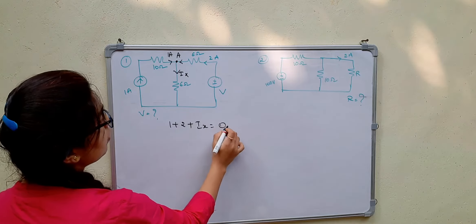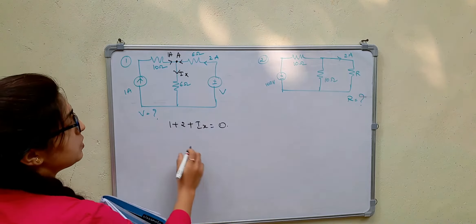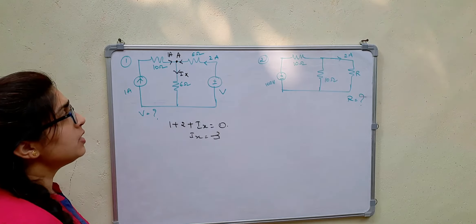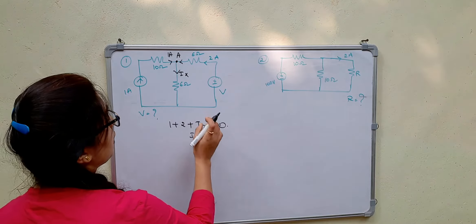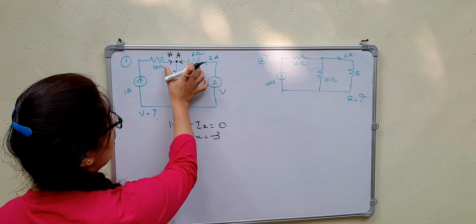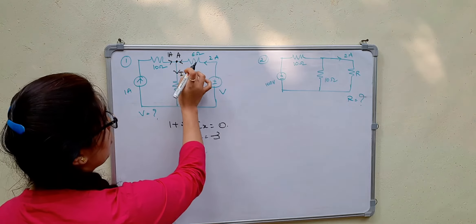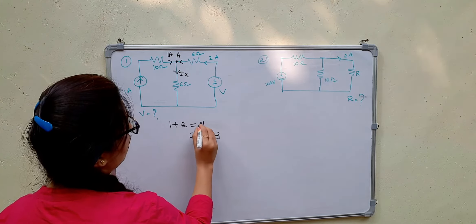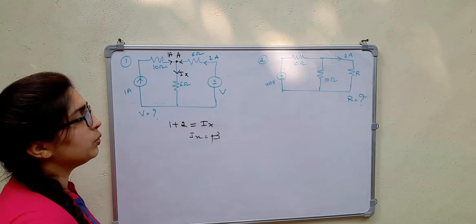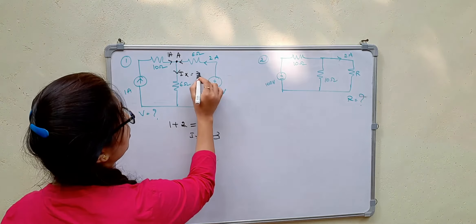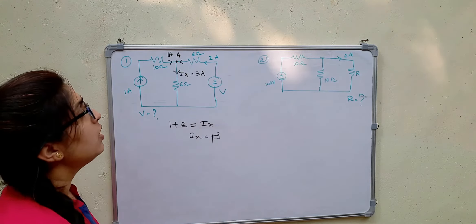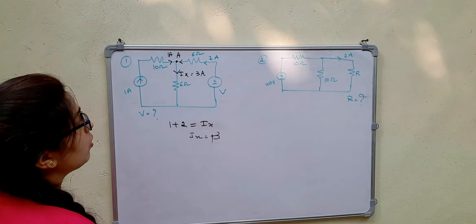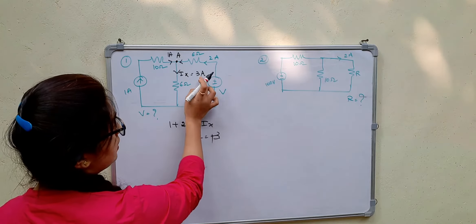Ix is equal to the sum of all currents equal to 0 by KCL. So 1 plus 2 is incoming, and Ix is outgoing. Therefore Ix is equal to plus 3 amperes. Now we have to find the voltage V. The current here is 3 amperes and this is 6 ohms, so now we apply KVL.